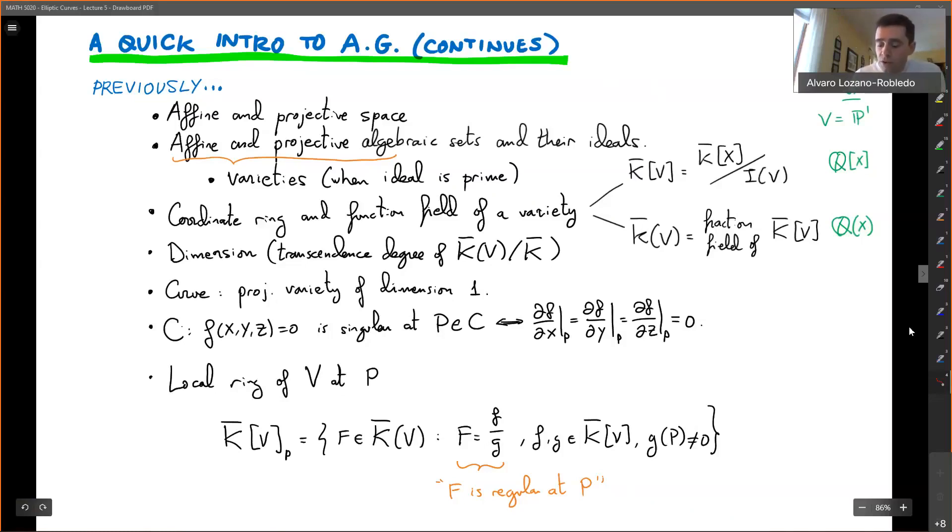So we've defined affine projective space, what are algebraic sets, what are their ideals. Last time we defined varieties and their coordinate ring and function field. We defined what is the dimension, which is the transcendence degree of the function field over the base field. We defined curves to be projective varieties of dimension one.